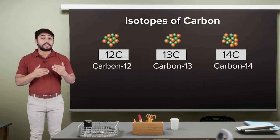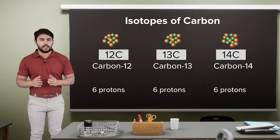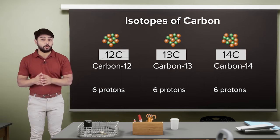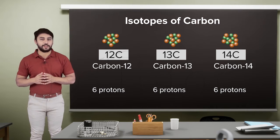Even though they have the same number of protons, in this case 6, they have a different number of neutrons. In other words, they all have different mass numbers.